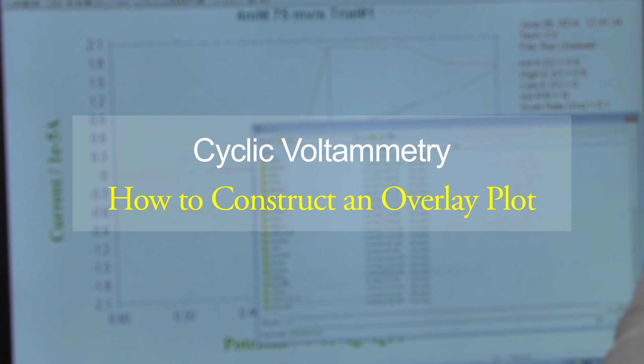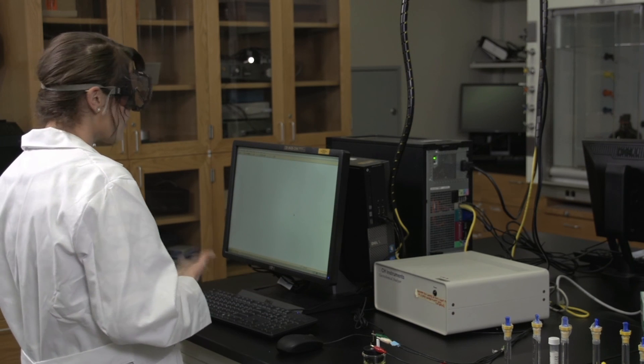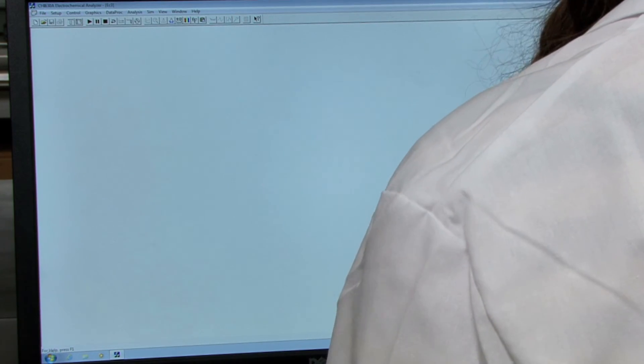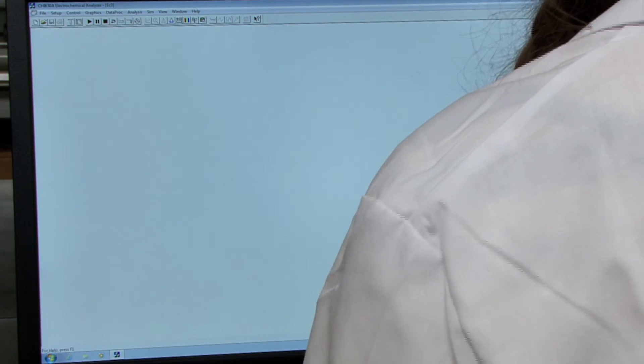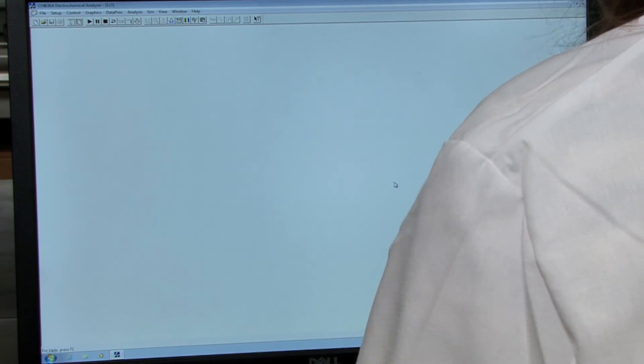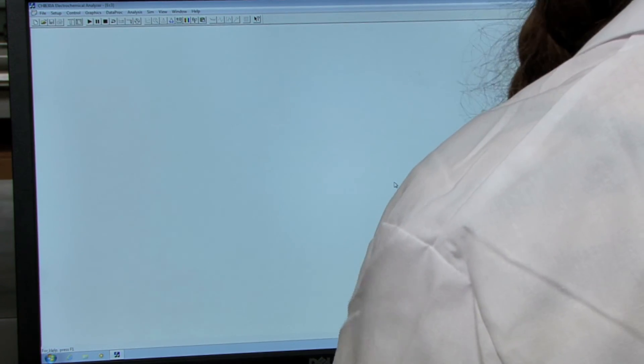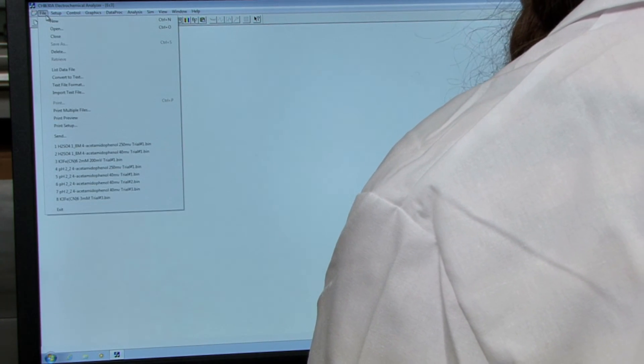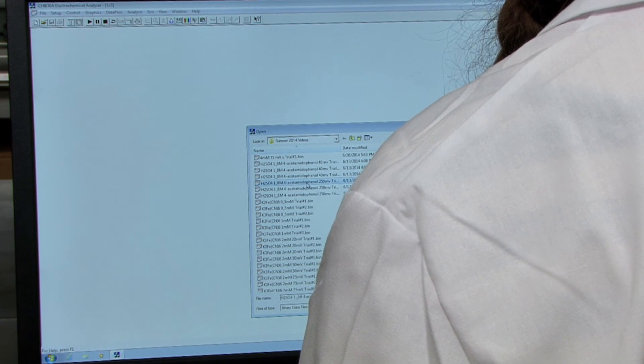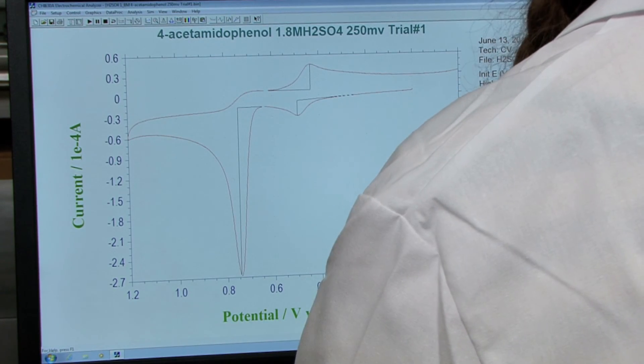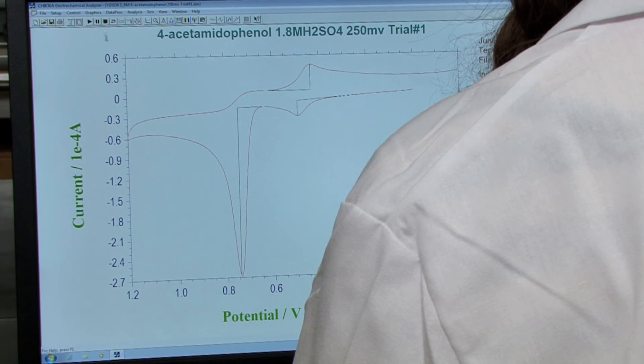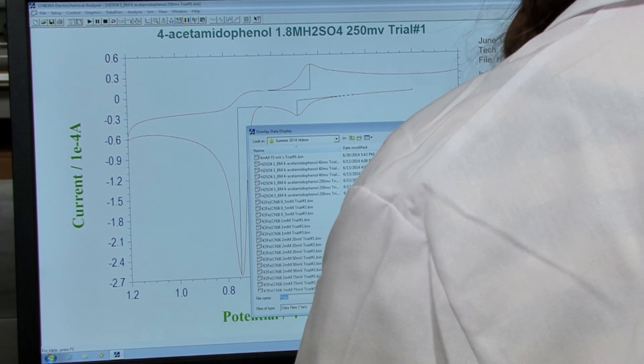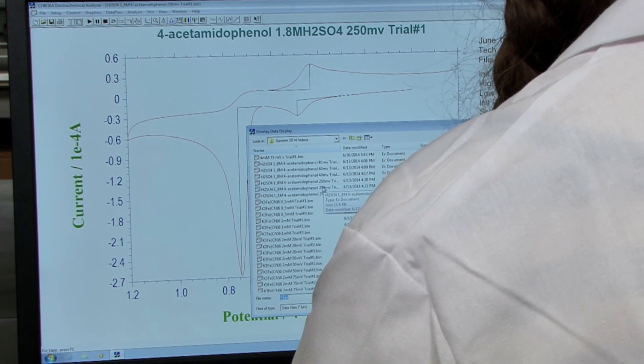Once you're finished collecting CVs of all your solutions, you need to make overlay plots. I recommend opening up a CV that has the widest y-axis, which corresponds to your current. Otherwise, when you try to overlay other graphs on top of that, it will cut off the top and bottom of your subsequent overlays. I'm going to first open a CV data results file. Now I'm going to make the overlay. To do that, go to graphics and then scroll down to overlay plots. Then select all the remaining graphs you'd like to overlay.